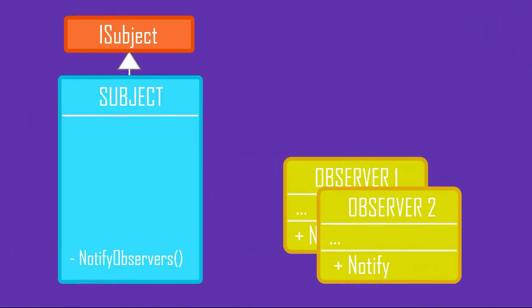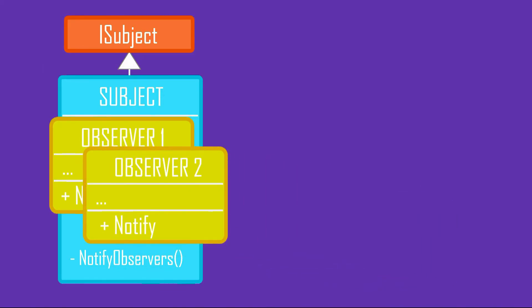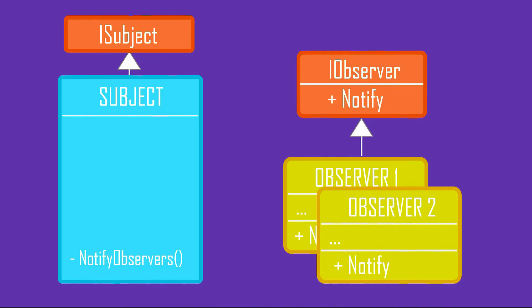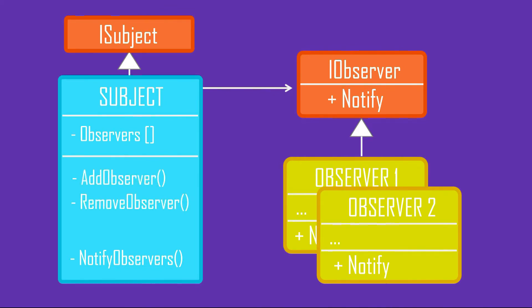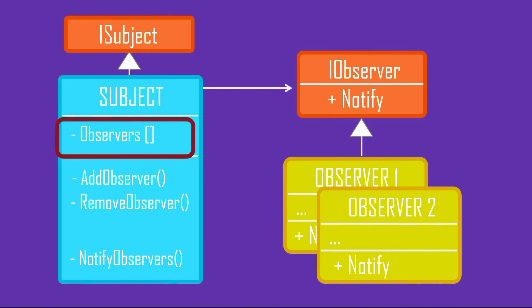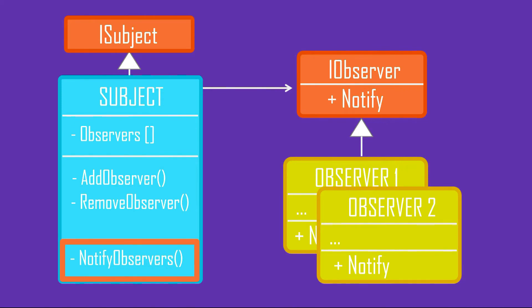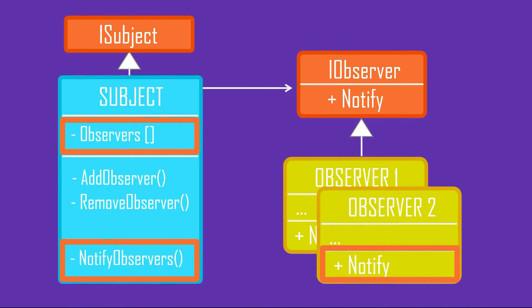Since Subject has to notify Observers, it must contain a local collection of all its Observers. There may be hundreds of observers, so we create an abstract Observer as a contract in the form of an interface. The Subject can safely rely on any class that implements the Observer interface with a method Notify. The Subject also contains a subscription mechanism for adding and removing observers, and when the event occurs, it notifies each observer in the collection by calling their Notify method.